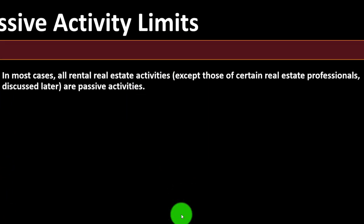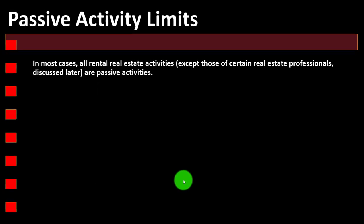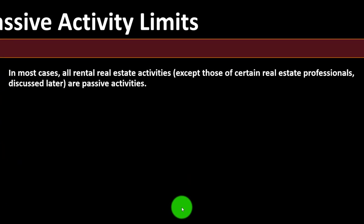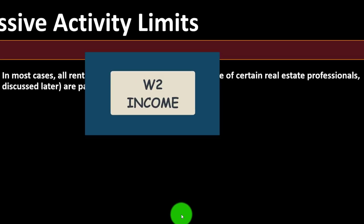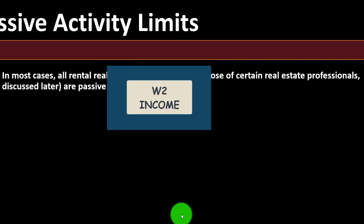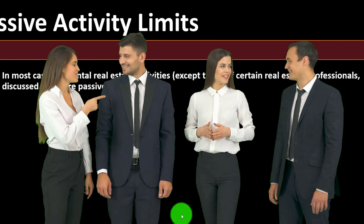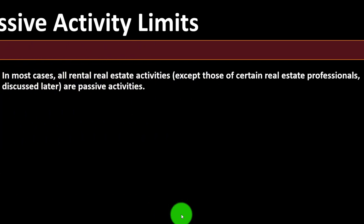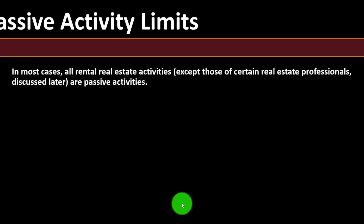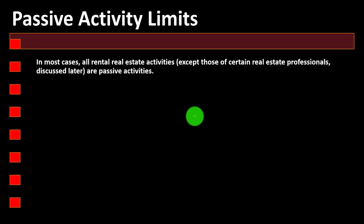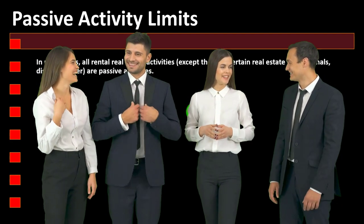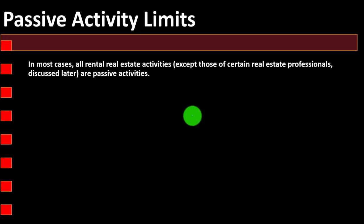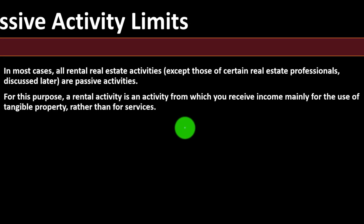Under passive activity rules, you might have limitations on losses, with the general requirement to match passive activity losses to passive activity income — not to non-passive income such as W-2 income. Many real estate professionals pushed back, asking why their losses should be treated differently than other businesses. This led to compromises: exceptions for those who actively participate or qualify as real estate professionals, each with different tax consequences.